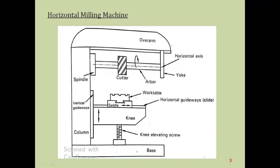Above the spindle and column, the next part is the over arm. This over arm is an adjustable arm provided above the vertical column. It supports a yoke, and this yoke in turn gives support to the arbor. Similar to the dead center in a lathe machine, this yoke behaves like a dead center towards the arbor, providing support so that proper material cutting happens.